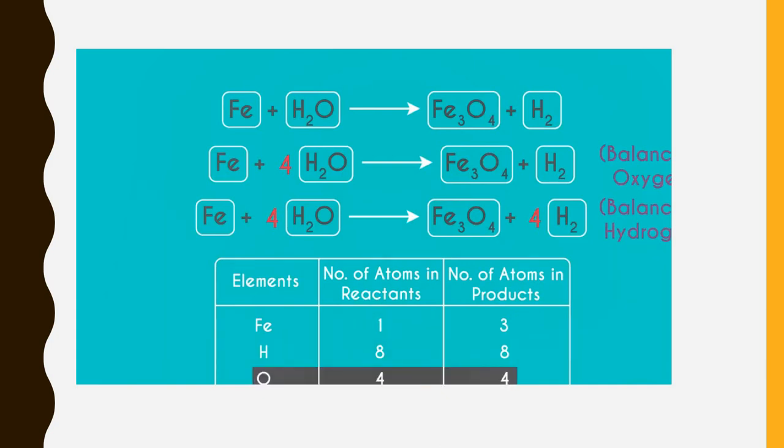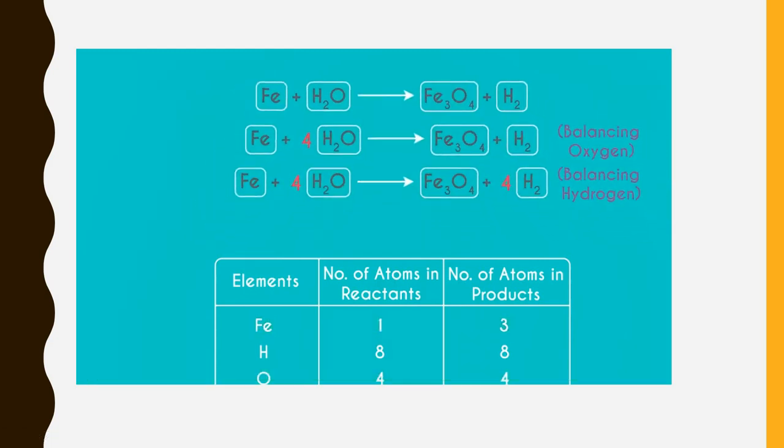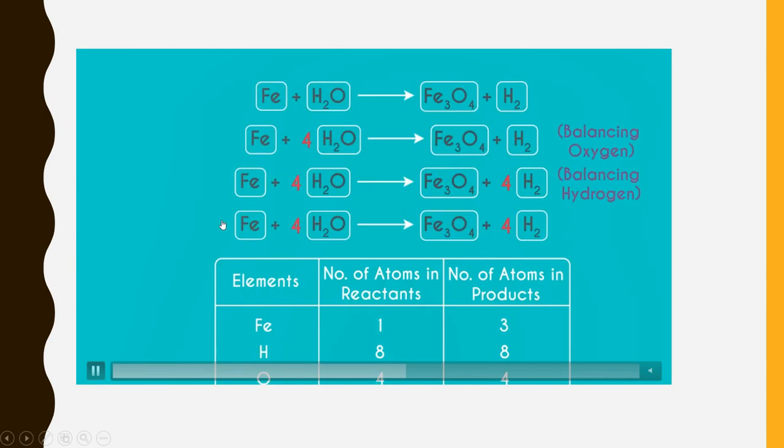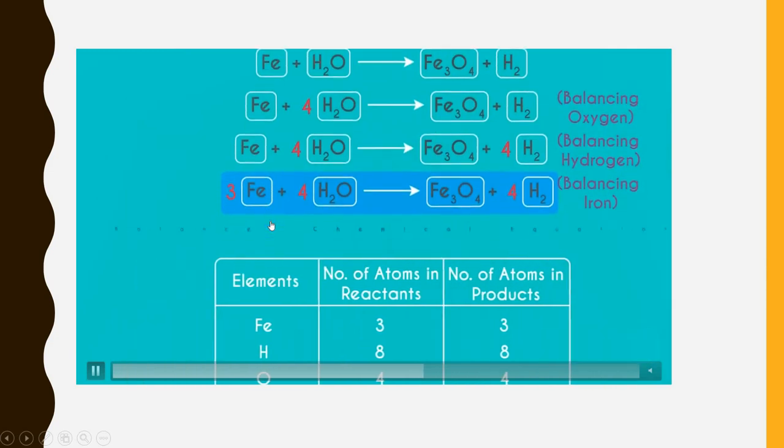Now we are left with iron. Iron having 1 and 3. 1 is towards reactant side and 3 atoms of iron is towards product side. Let's add the coefficient 3 towards reactant side. So now we are balanced iron. Is it a balanced equation now? Yes, it is a balanced chemical equation.